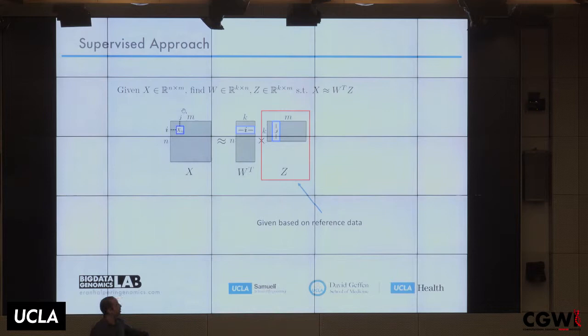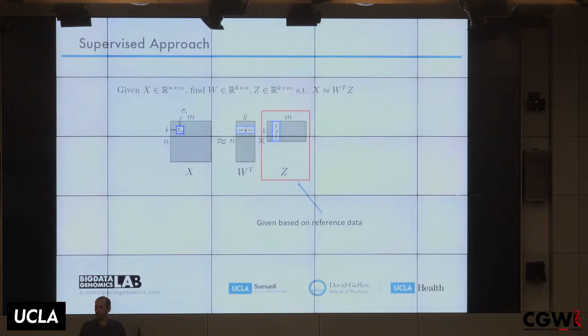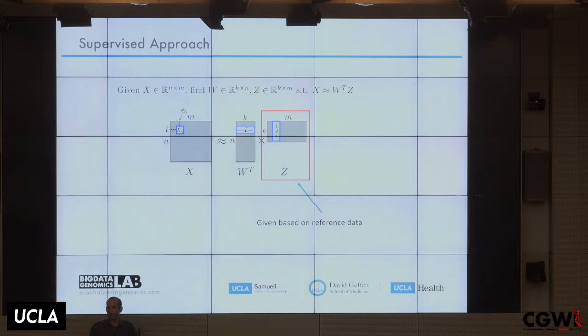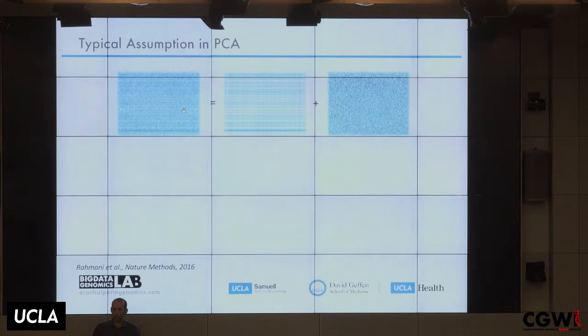There are really two different approaches. One is supervised: you sort cells, run methylation on each sorted cell type, and Z is given. But this is very expensive — if you have six cell types, the cost is six times more. The largest available reference dataset has only six samples, all males, covering only six cell types with no finer granularity. The other approach is unsupervised, which is what I'm going to talk about today.